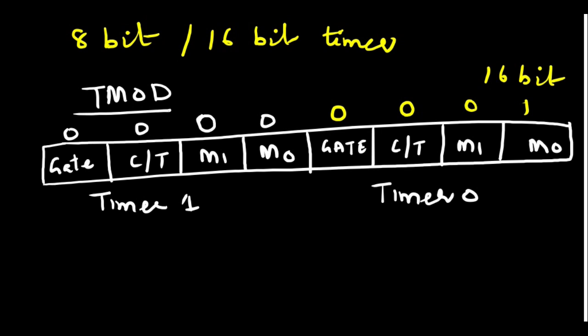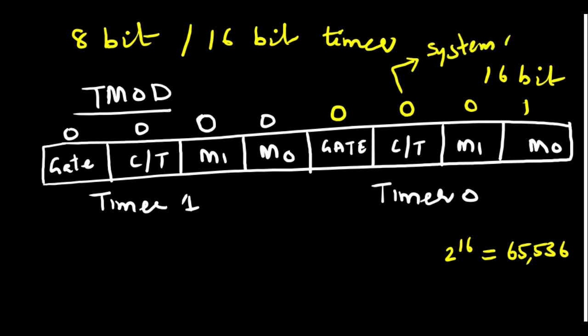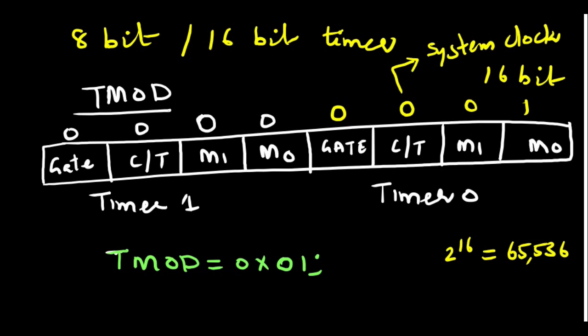In 16-bit mode, the timer has 2 to the power of 16 states, which is 65,536 — it can count up to 65,536. With C/T-bar=0, the timer input comes from the system clock. So the value we are going to load into the TMOD register is 0x01: all Timer 1 bits are 0, Gate=0, C/T=0, M1=0, M0=1. This means we are using Timer 0 as a 16-bit timer driven by the system clock.